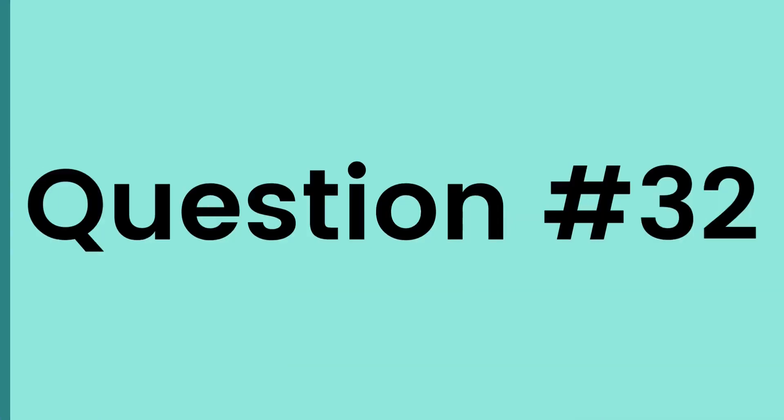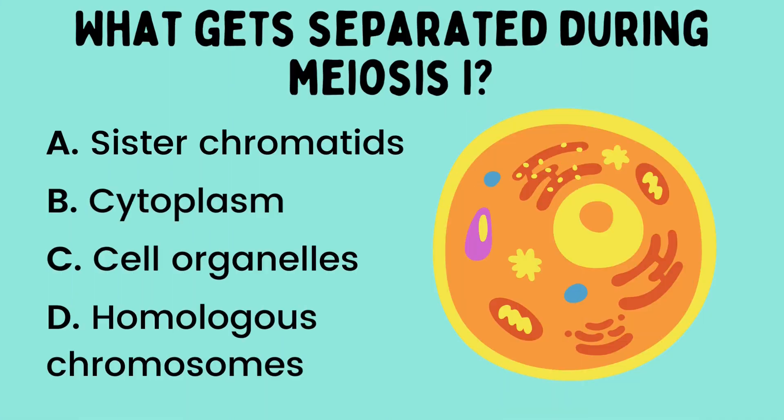Question number 32. What gets separated during meiosis 1?